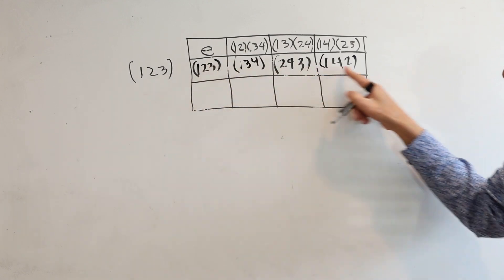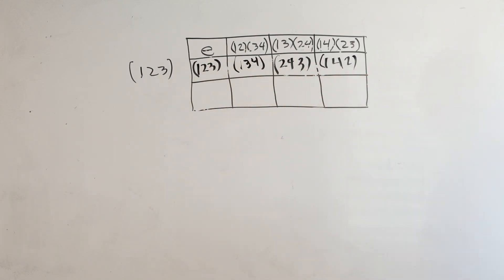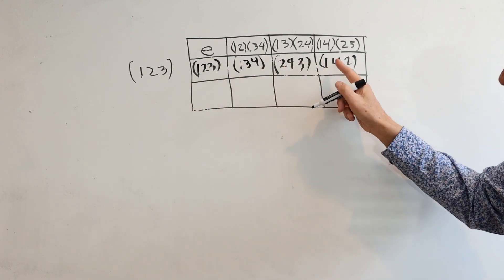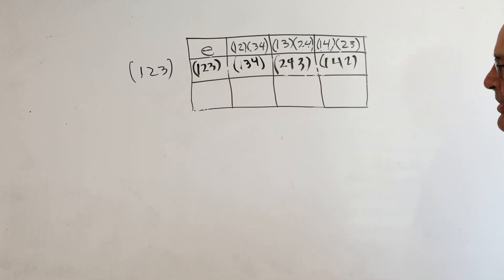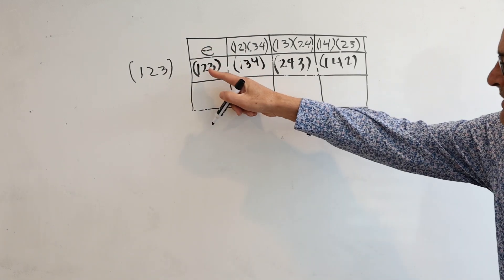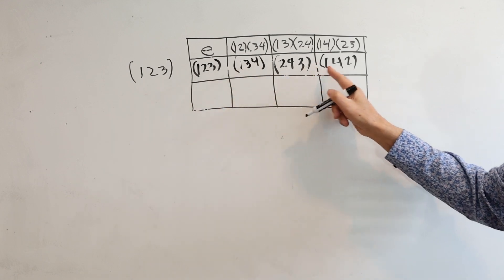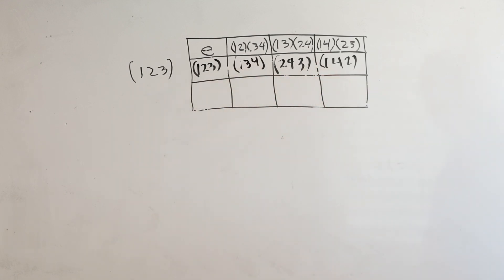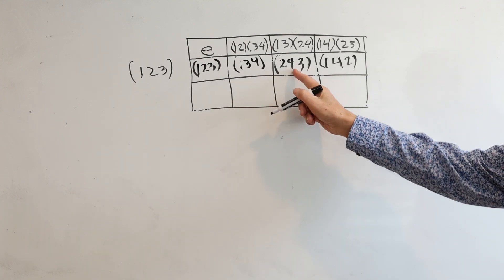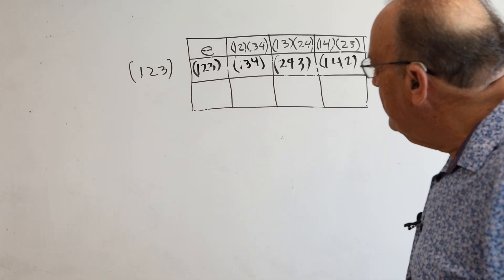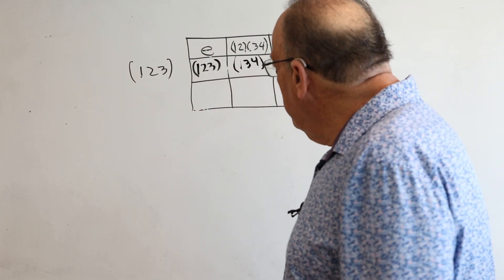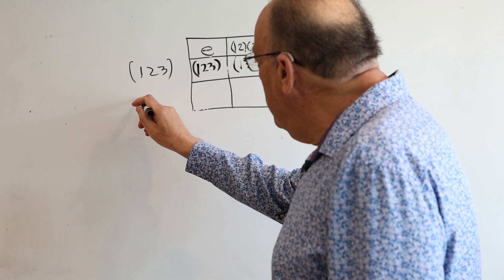This is called a coset. It's a set, so the order doesn't really matter, but it's not a subgroup because it doesn't have the identity. Notice we didn't get any repeats. So these four permutations are different from any of the ones above, and they're a different cycle type. We didn't use one-two-four yet, so let's put that here.